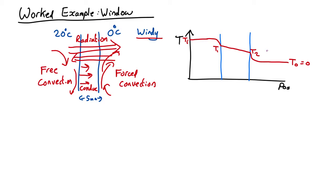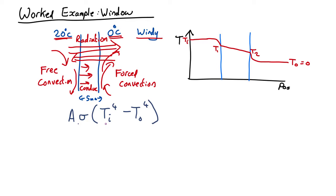It's very important to set up that model first before plugging in equations. Now let's calculate the radiation first because that's kind of independent of everything else. The radiation outwards depends on the temperature on the inside and the radiation inwards depends on the outside. So the heat flux is going to be A times the Stefan-Boltzmann constant sigma (5.67 × 10⁻⁸), times T_in⁴ minus T_out⁴. These have to be in Kelvin — 0°C is 273 K and 20°C is 293 K. Plugging in with area of 1, that comes out as 102 watts for a 1 square meter window. That's the radiation loss.